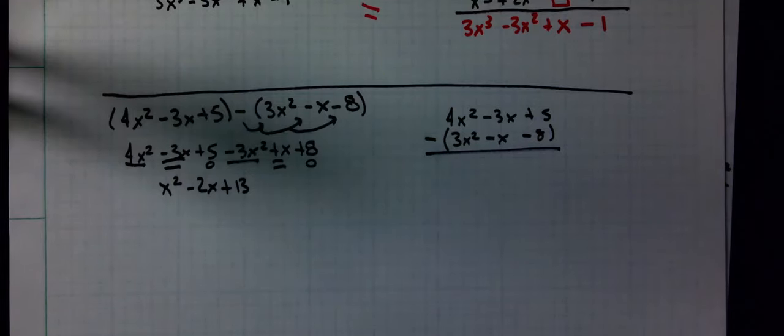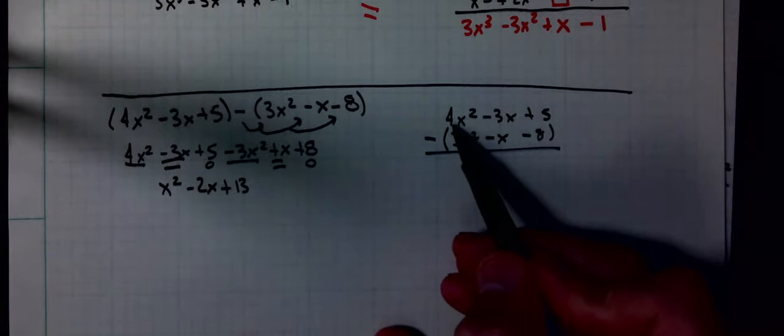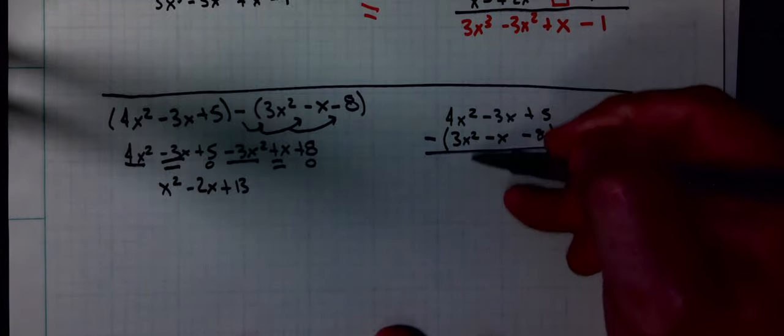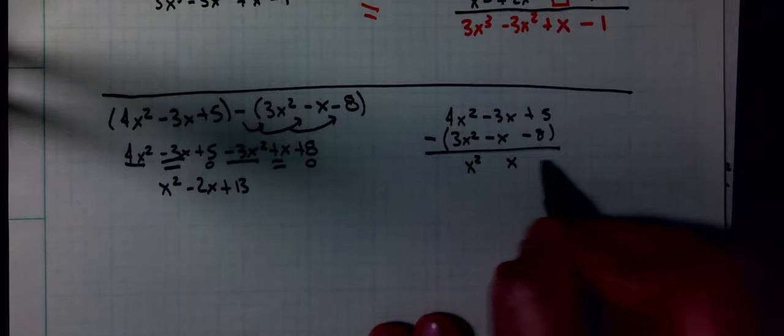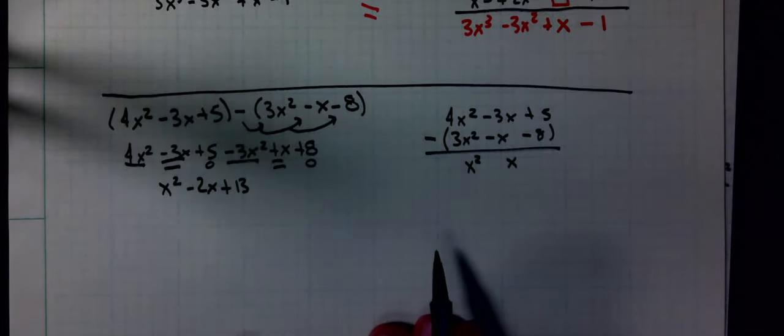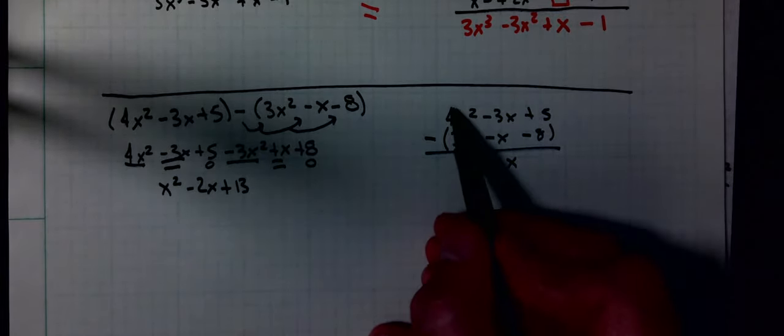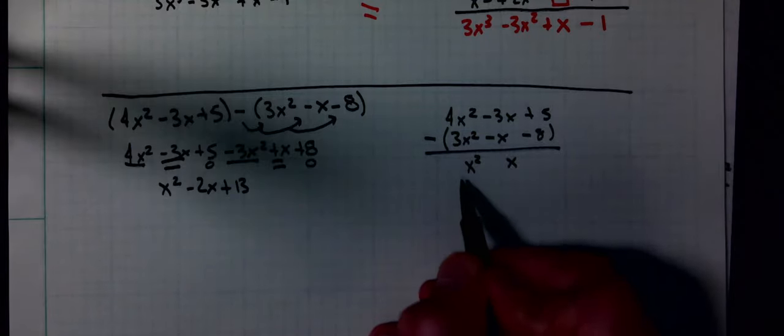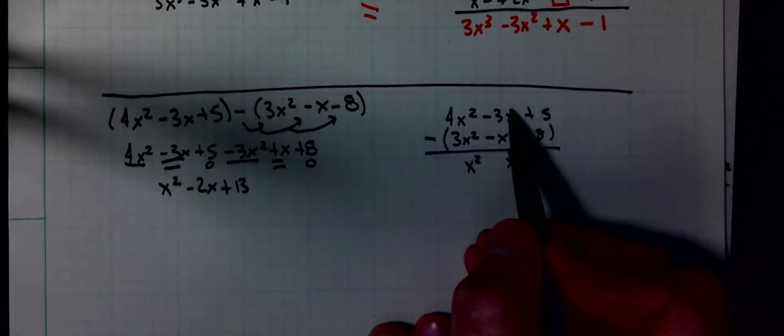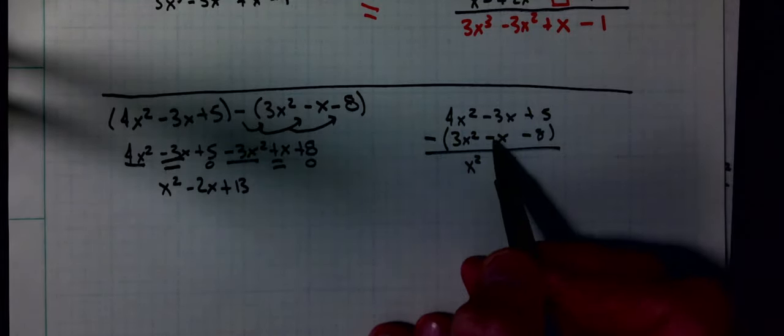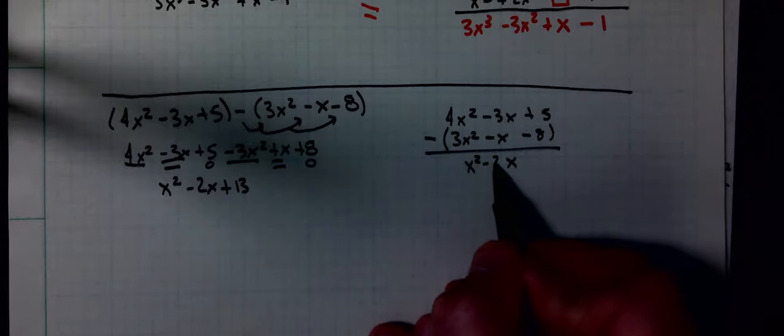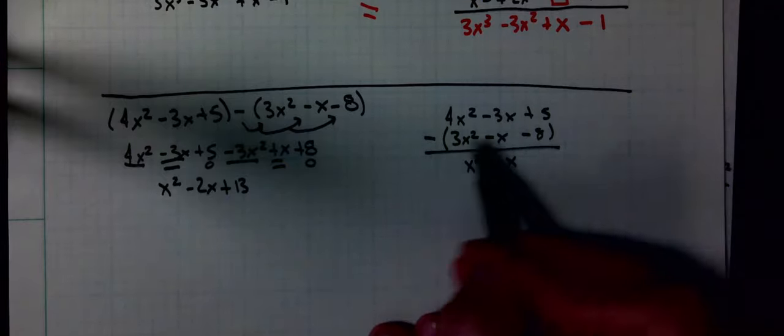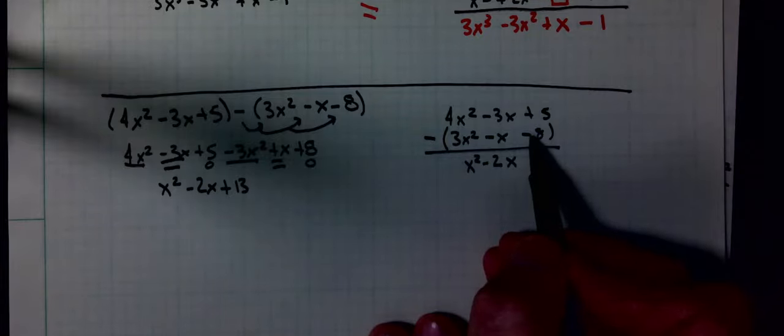Remembering that negative applies to every term. So here, I know I'm going to have x squareds, I'm going to have some x's, I'm going to have things without x. I'm just going to do the math with the numbers. 4 minus 3. Negative 3 minus a minus 1. Negative 3 plus 1 is negative 2. 5 minus a minus 8 is 5 plus 8.